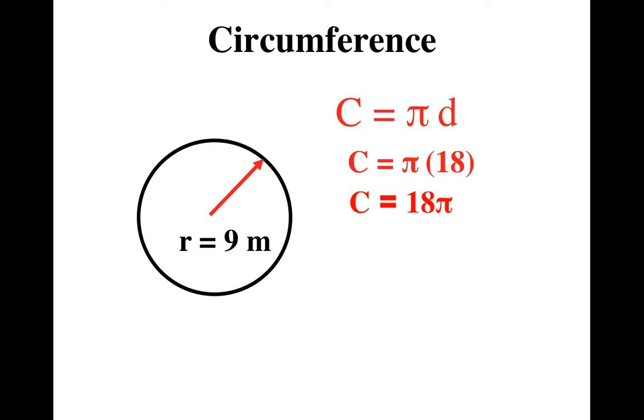But if we want to find out what the number was about, we can multiply it times 3.14. So we get the answer. Circumference is about 56.52 meters.